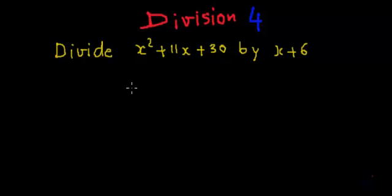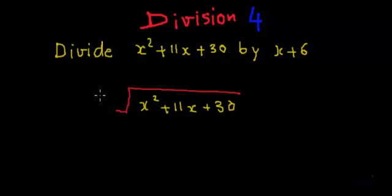I think this is very familiar to you. I have made this sign and then I'll write the dividend over here, which is x squared plus 11x plus 30. And it has to be divided by x plus 6. So what is the procedure of doing division using this method?